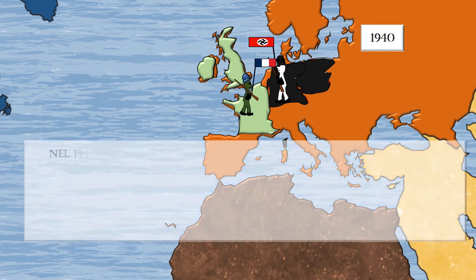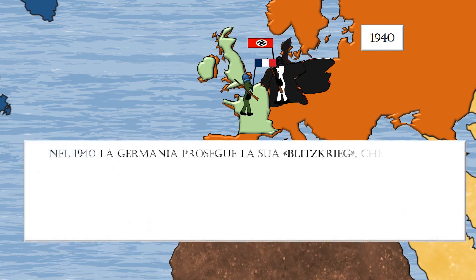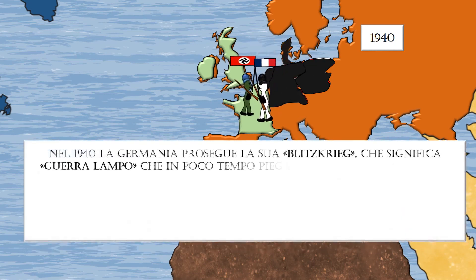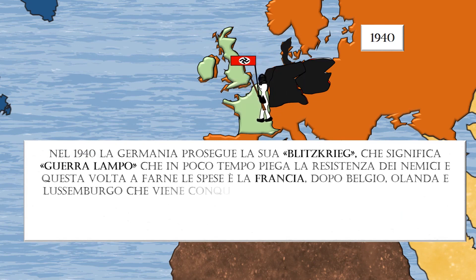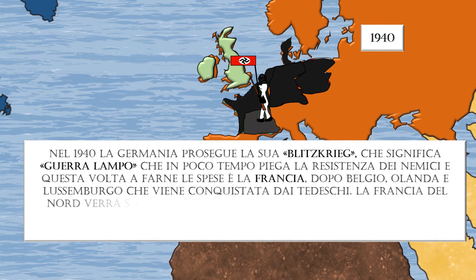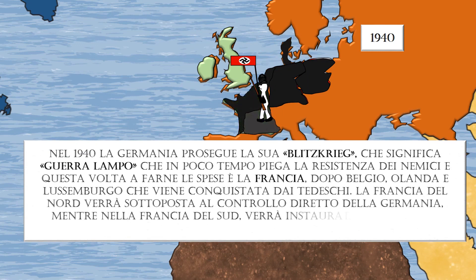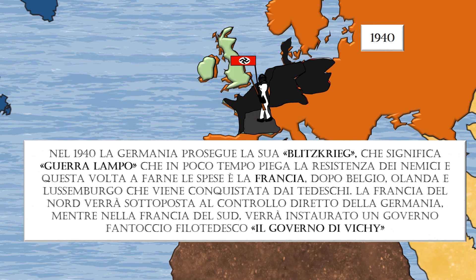In 1940, Germany continued its Blitzkrieg — meaning lightning war — which in a short time bends the enemy's resistance. This time it was France, after Belgium, Holland, and Luxembourg, that was conquered by the Germans. Northern France came under direct German control, while a pro-German puppet government, the Vichy government, was established in southern France.